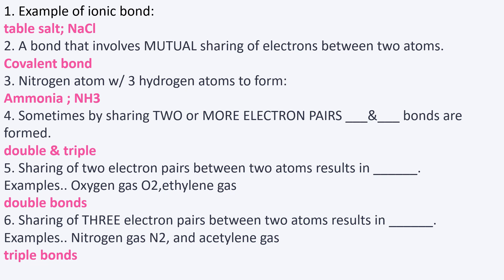Number three: a nitrogen atom with three hydrogen atoms forms ammonia, NH3. So nitrogen atom with three hydrogen atoms forms ammonia, NH3. These questions are good for a refresher and study guide in preparation for your TEAS exam.